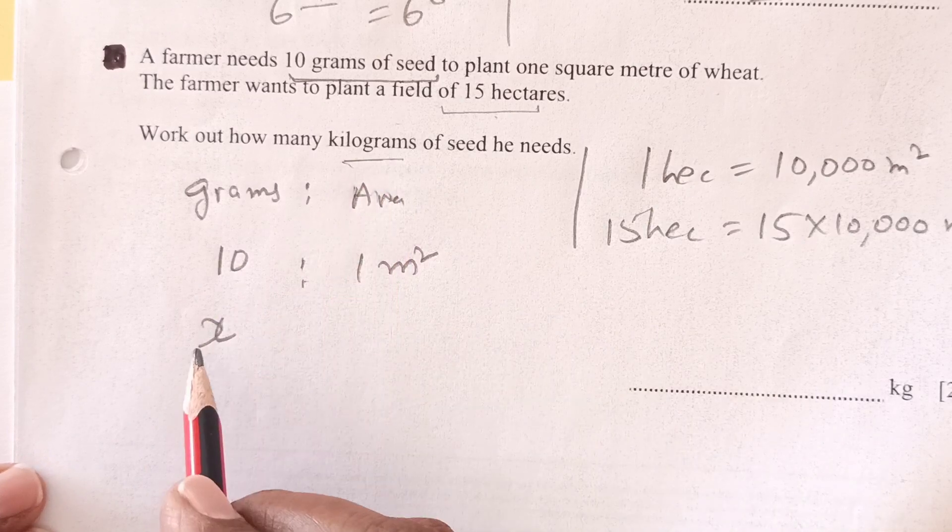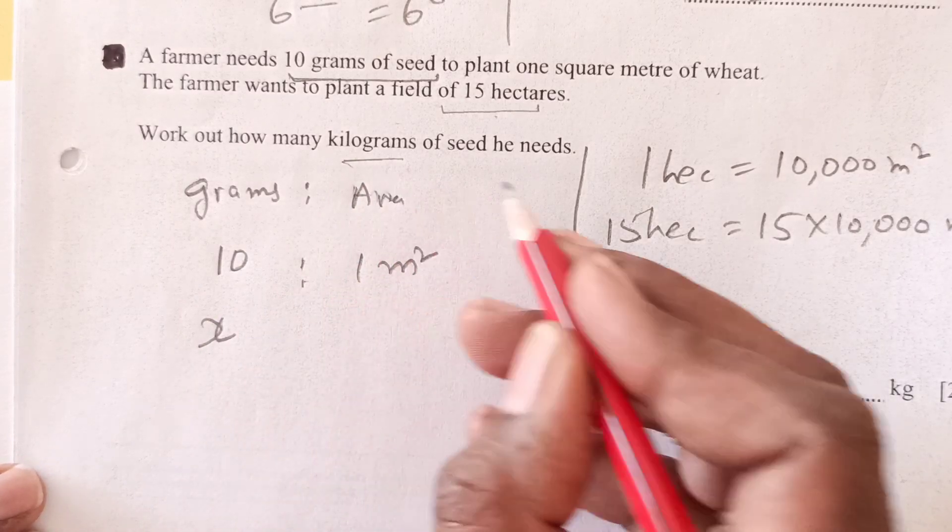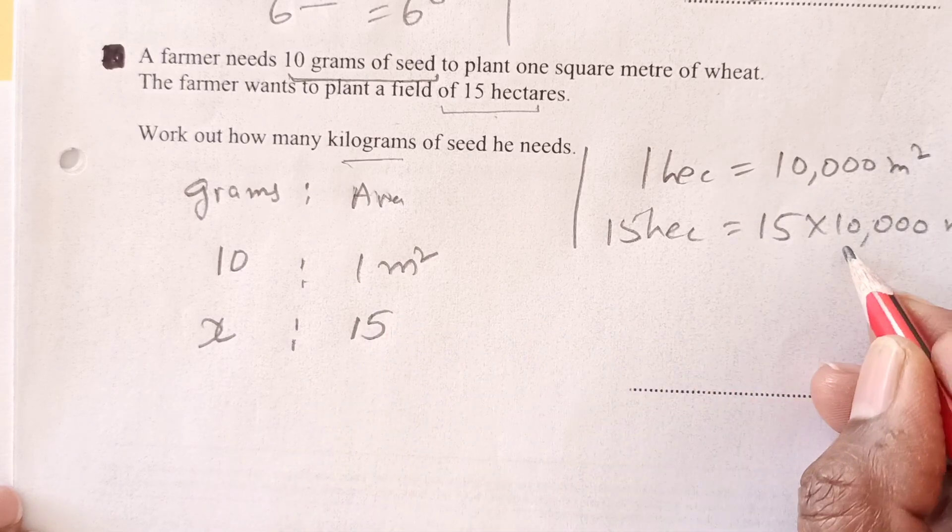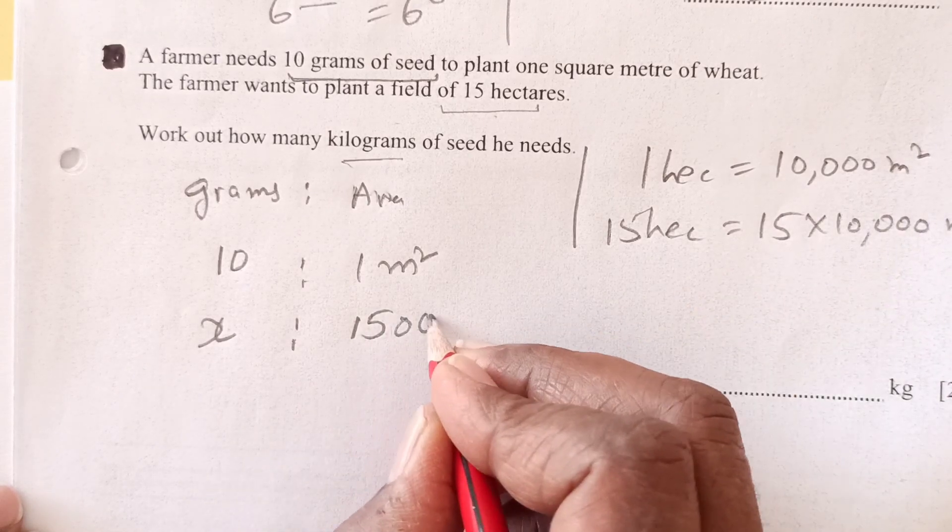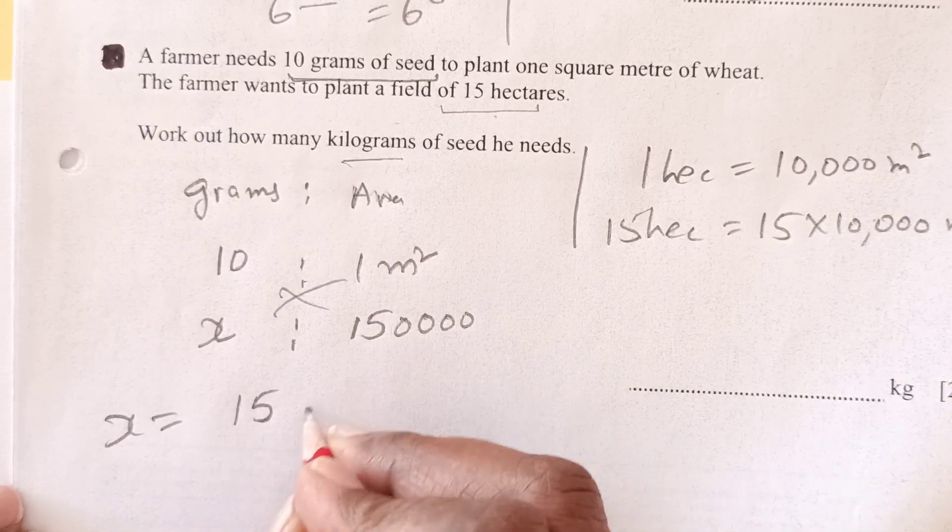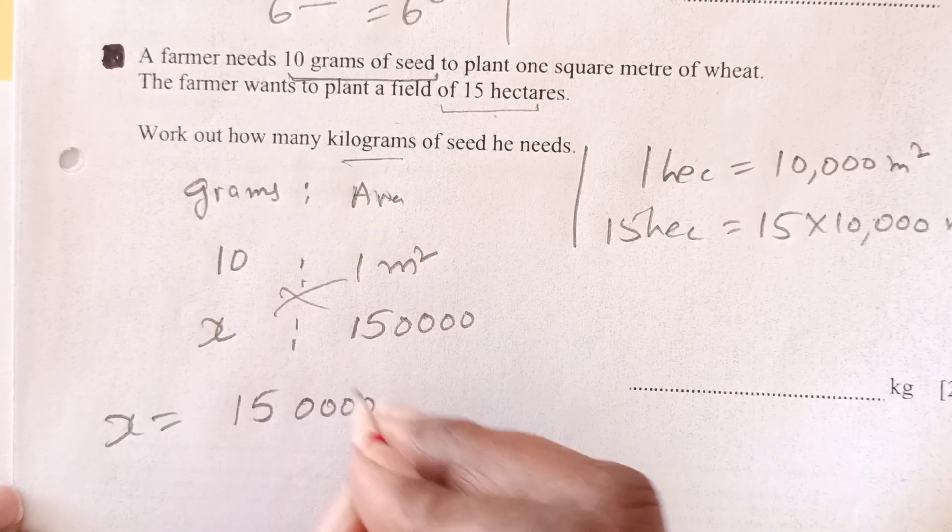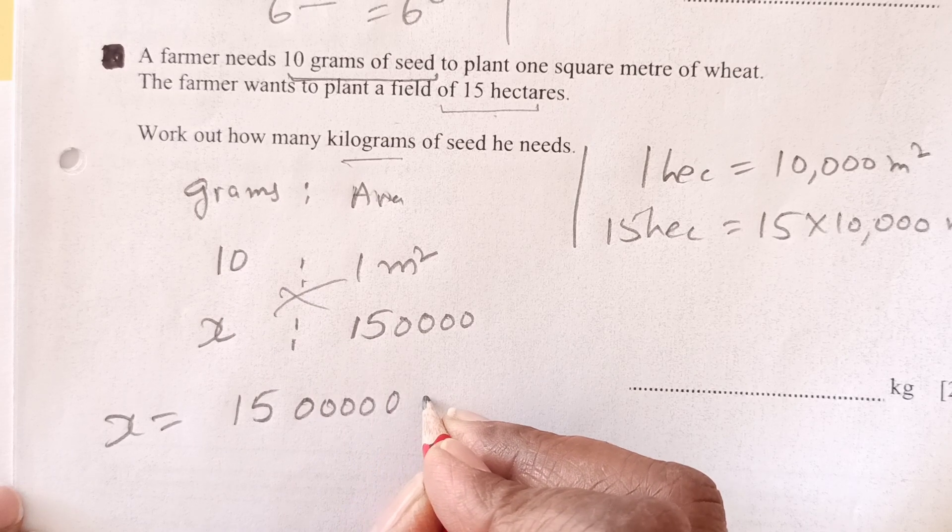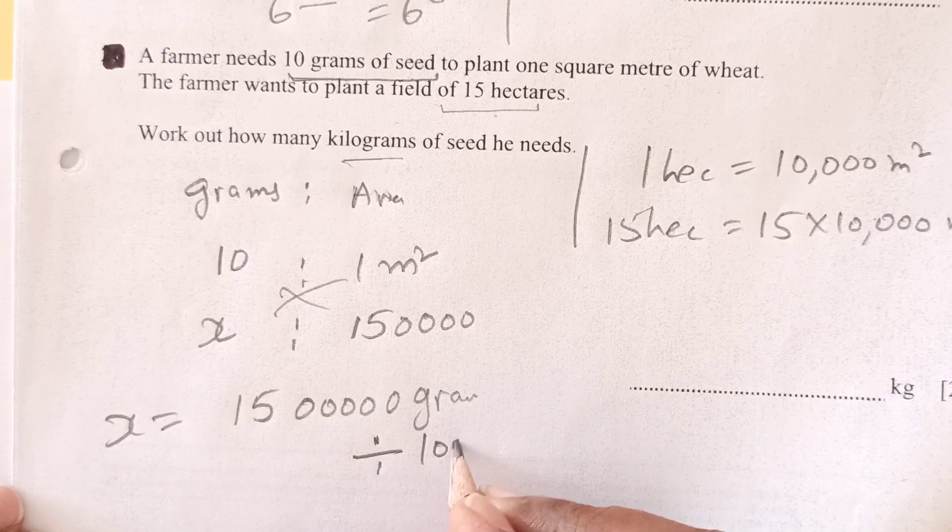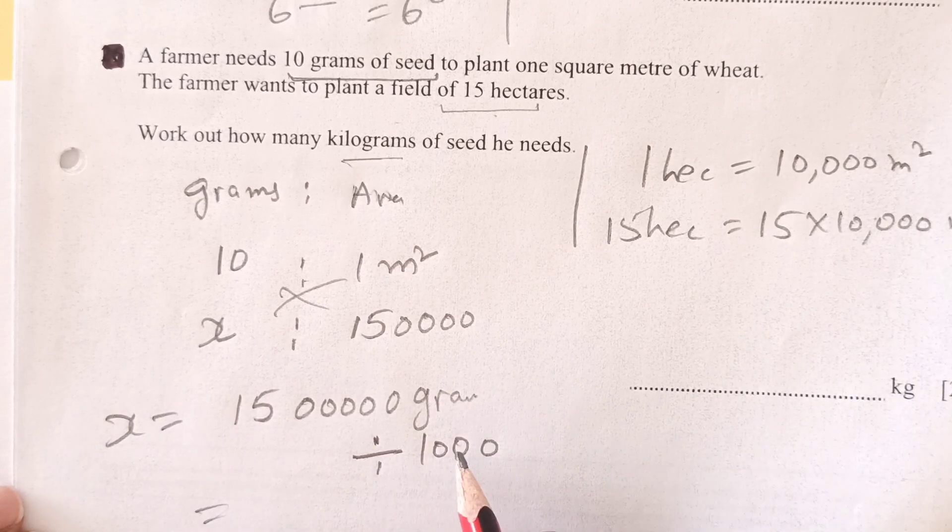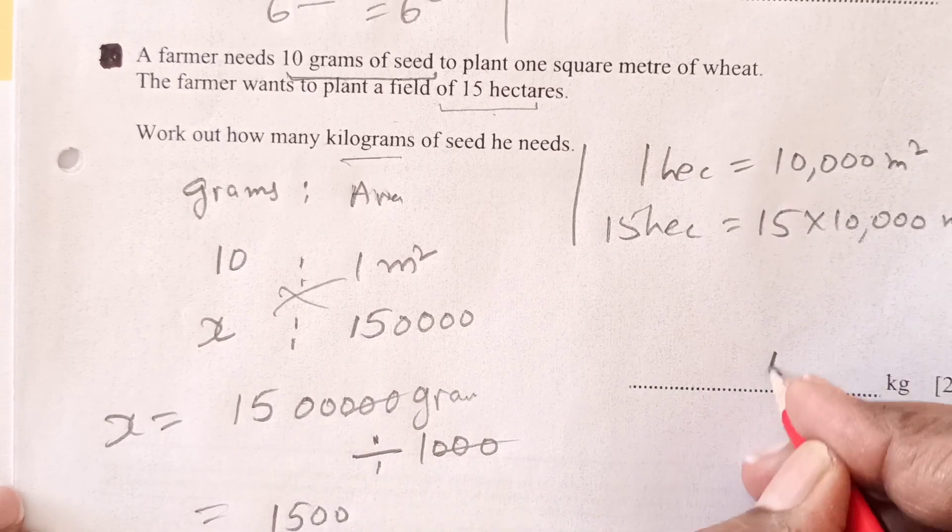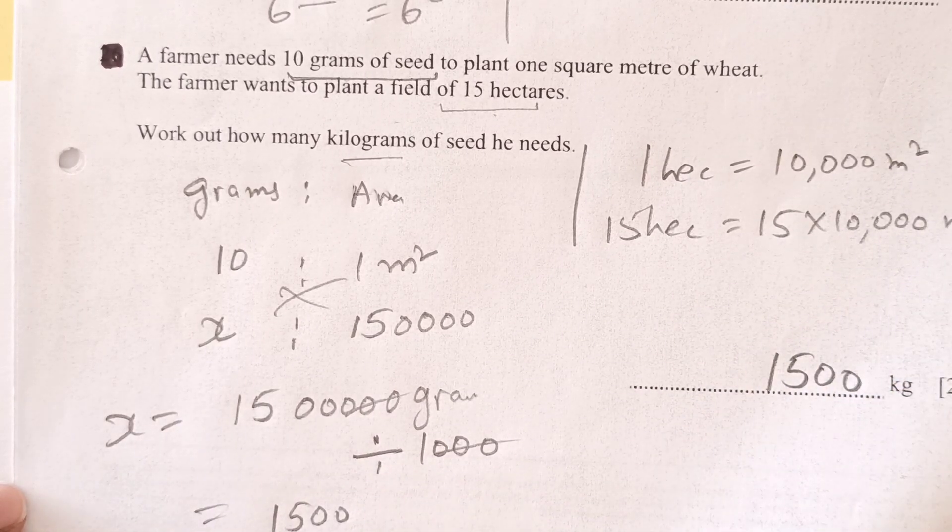So how many kilograms? Actually first let's find out in grams, then we'll convert that into kilograms. So this is 1, 5, 1, 2, 3, 4 zeros. Cross multiply, you'll get value of x. This is grams. So we're looking for the kilogram, so divided by 1000. So these three zeros will be gone, so 1500. So final answer is 1500.